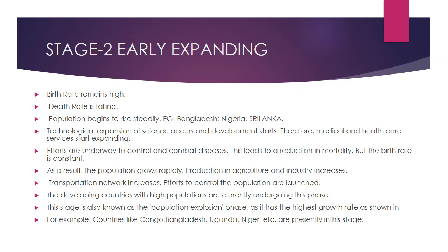Stage 2 is called Early Expanding. In this stage, the birth rate remains high — just like Stage 1 — but the only change is that the death rate is falling. Population begins to rise steadily. As the death rate is falling and the birth rate is still high, there is more population growth. This is seen in countries like Bangladesh, Nigeria, and Sri Lanka.